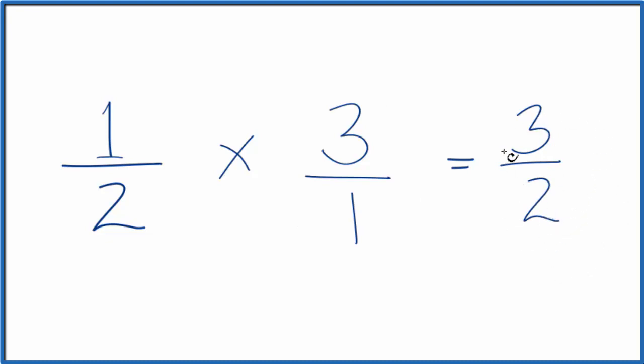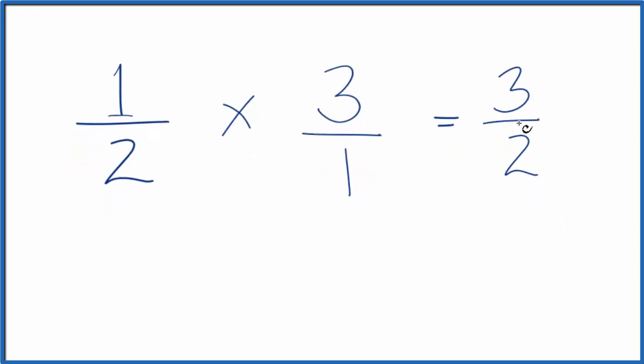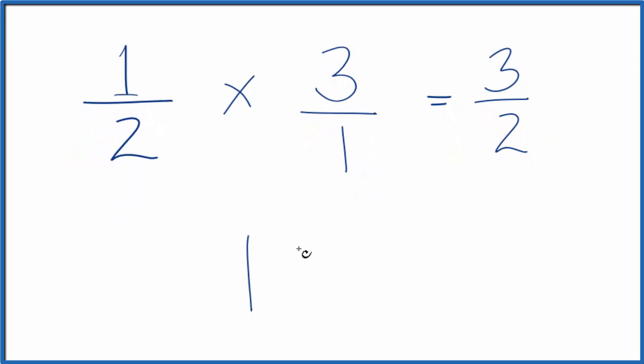This is what we call an improper fraction. The top is bigger than the bottom. So let's change this to a mixed fraction. Two goes into three one time with one left over. So this is one and a half.